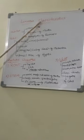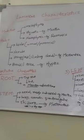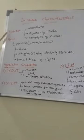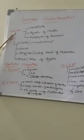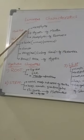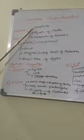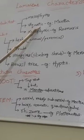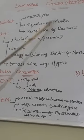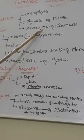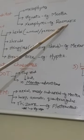Lamiaceae characters. In terms of habitat, most of the plants in this family are grown as mesophytes. Some are aquatic plants — a best example is Mentha. Next, there are xerophytic plants, such as rosemary.